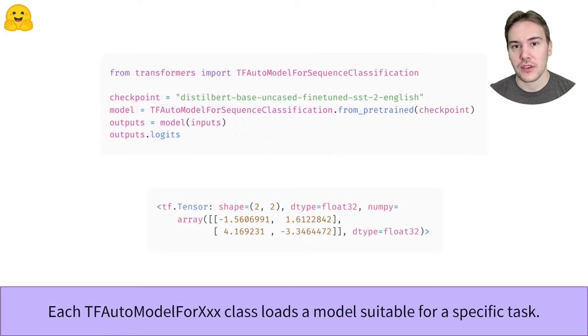To get an output linked to our classification problem, we need to use the AutoModelForSequenceClassification class. It works exactly as the AutoModel class, except that it will build a model with a classification head. There is one AutoClass for each common NLP task in the Transformers library. Here, after giving our model the two sentences, we get a tensor of size 2x2, one result for each sentence and for each possible label.